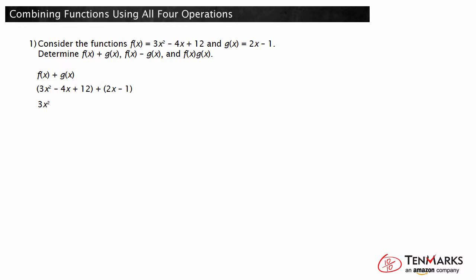Negative 4x plus 2x is negative 2x, and 12 plus negative 1 is 11. So, f of x plus g of x is 3x squared minus 2x plus 11.